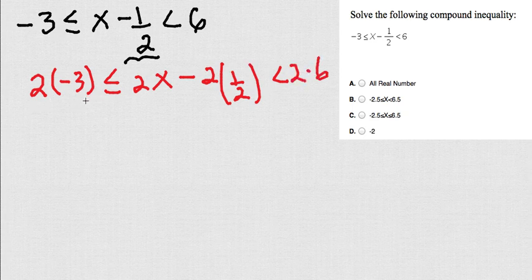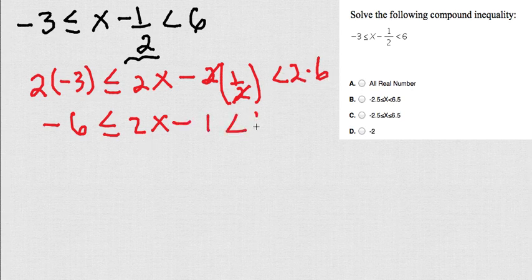Look what's going to happen. 2 times negative 3 is negative 6, less or equals than 2x. Now here, 2 divided by 2 is just 1. So minus 1 less than 2 times 6, which is equals to 12. Awesome.